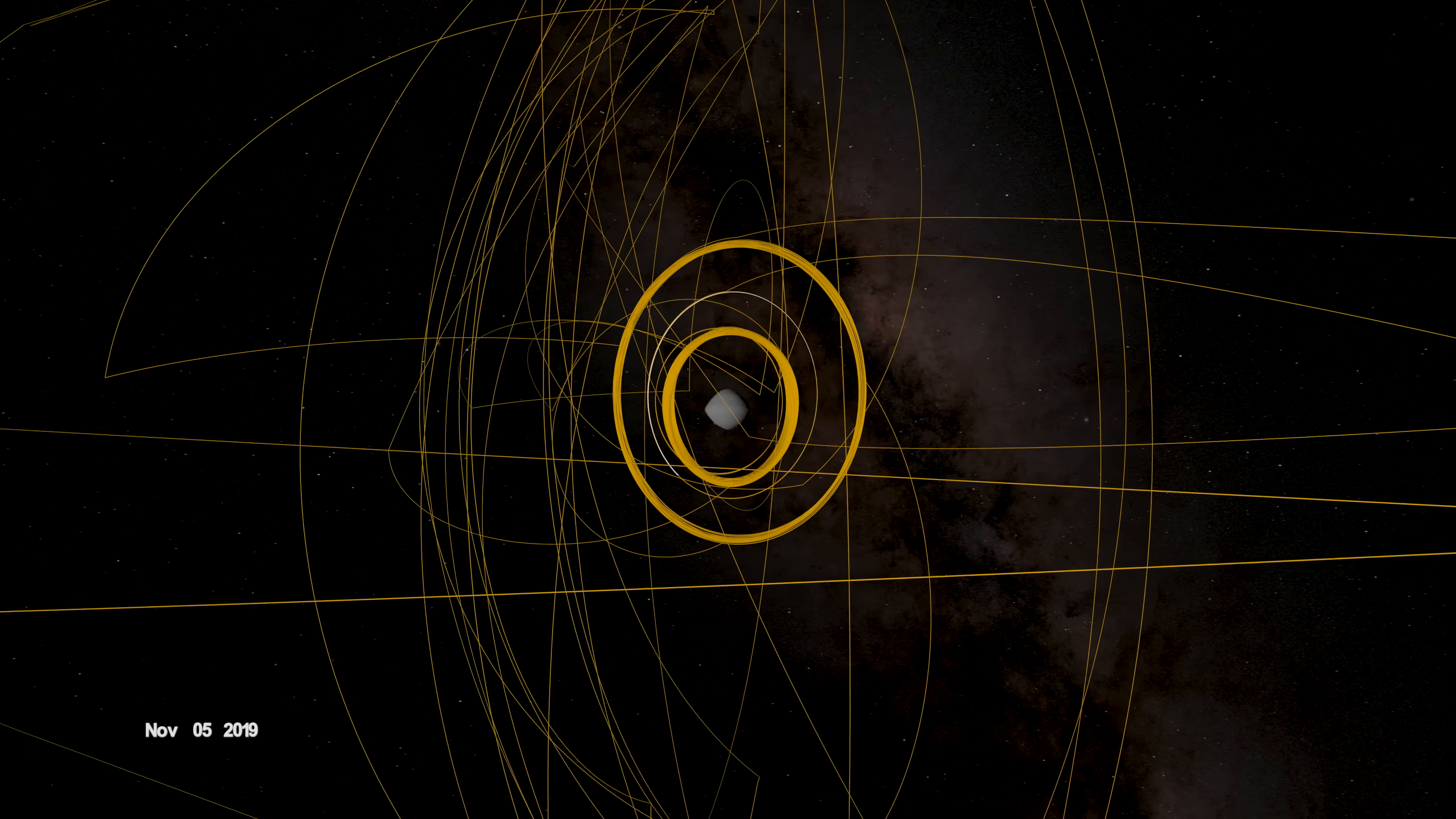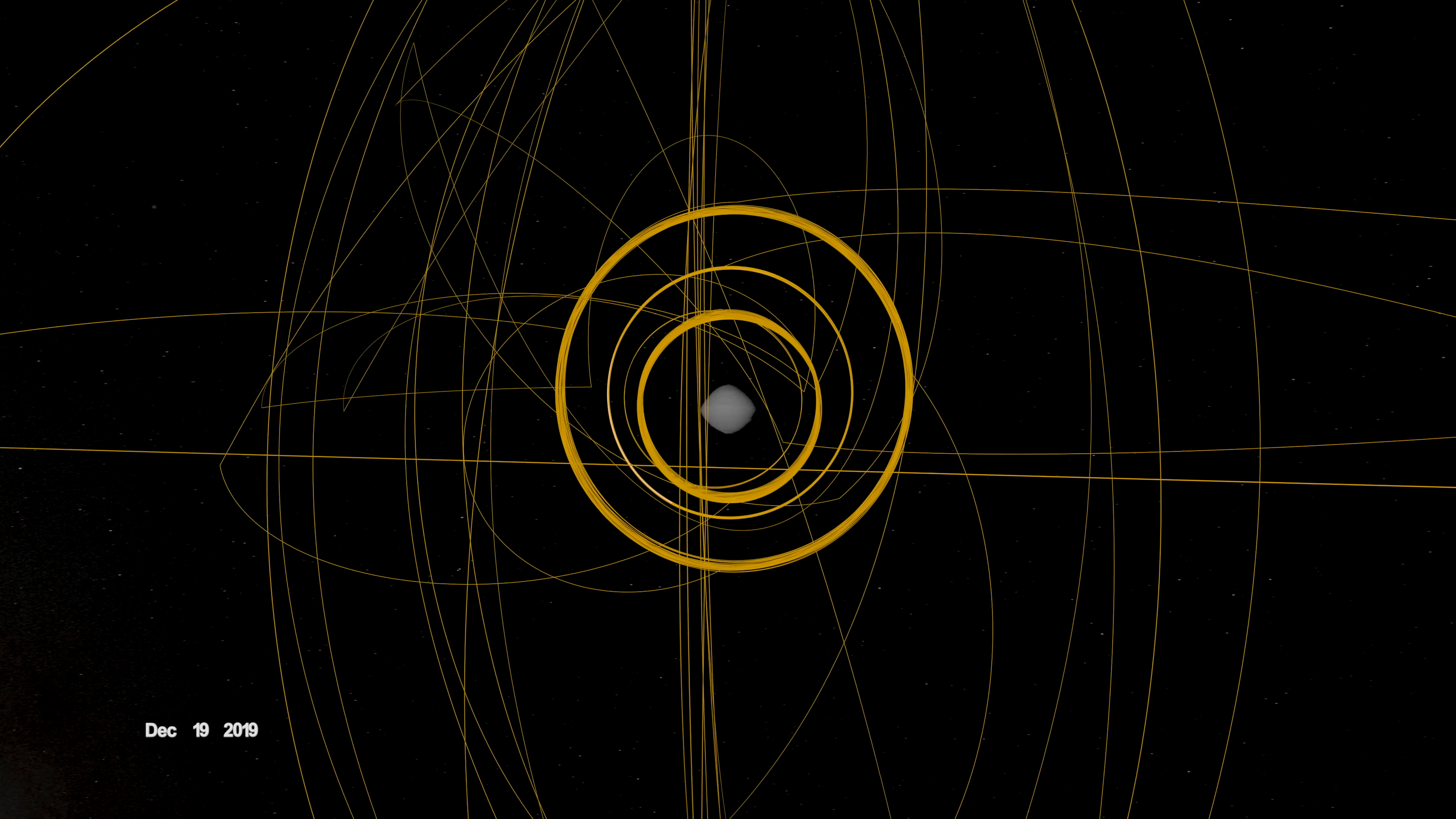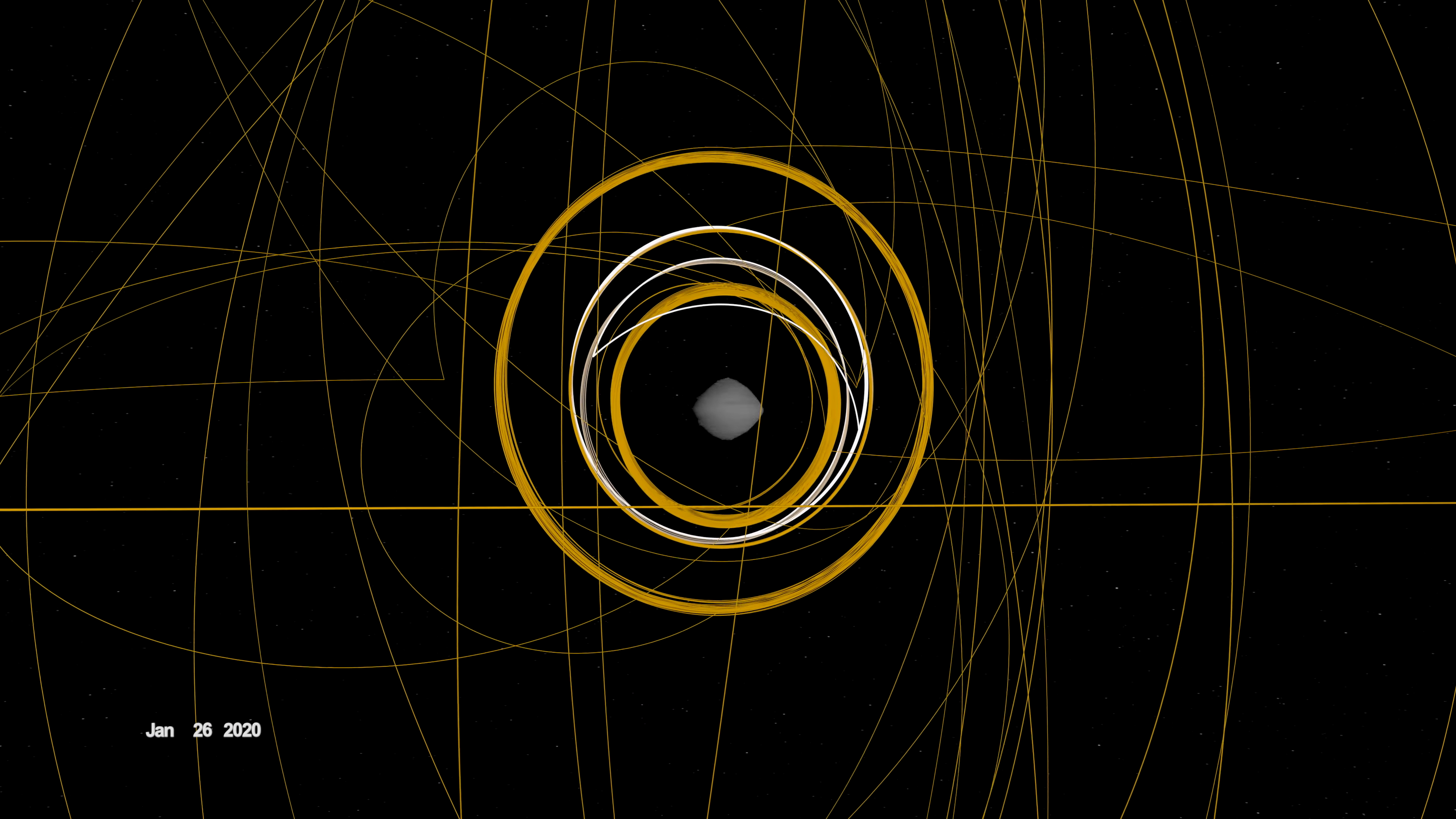OSIRIS-REx concluded its first year at Bennu back in orbit, circling the asteroid's terminator, or boundary, between day and night. Here, outside forces acting on the spacecraft are balanced, allowing it to orbit within the same plane over time.